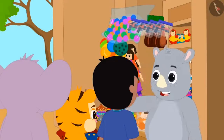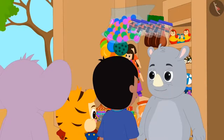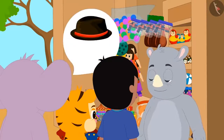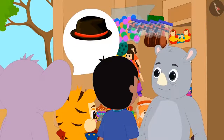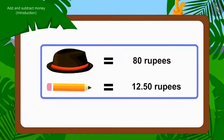All three friends have come to Gaggoo's toy store. They have to buy a hat and a pencil. The cap is Rs. 80 and the pencil is Rs. 12.50.